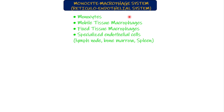Monocytes are present in the blood and then enter into the tissues where they are converted into macrophages — tissue macrophages. These tissue macrophages can be of two types: mobile tissue macrophages, which are roaming through the tissues ready to attack foreign bodies, and fixed tissue macrophages, which are resting in the tissues and will be converted into mobile ones when needed.